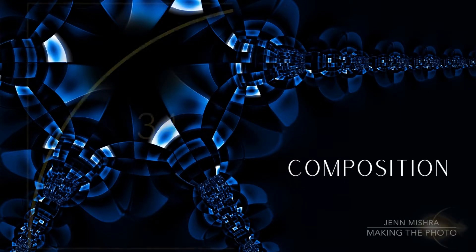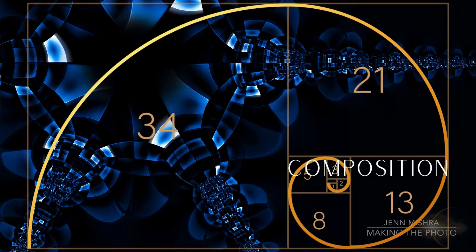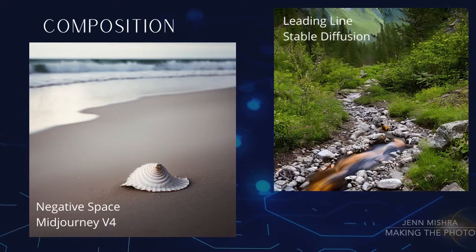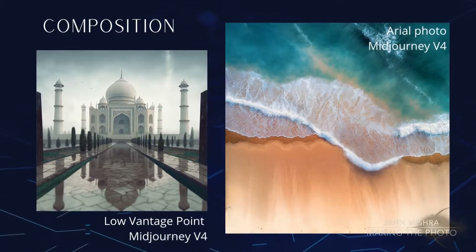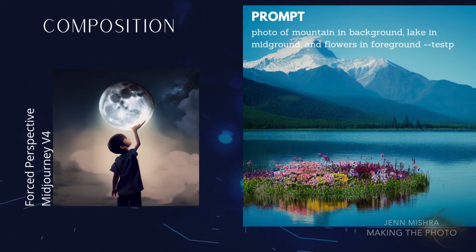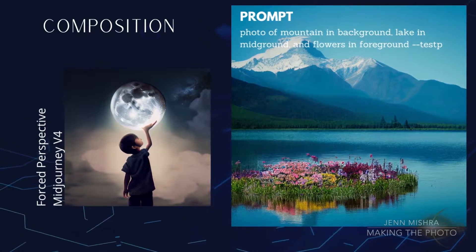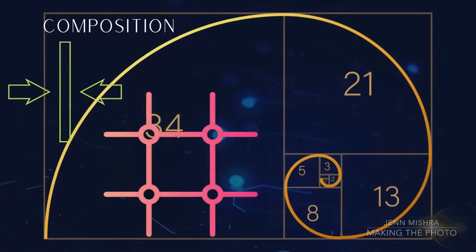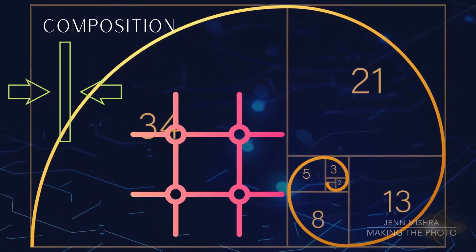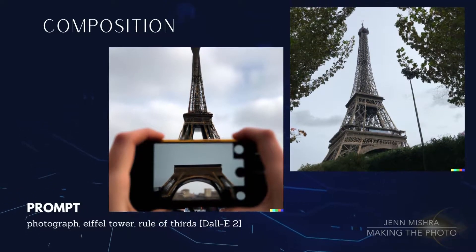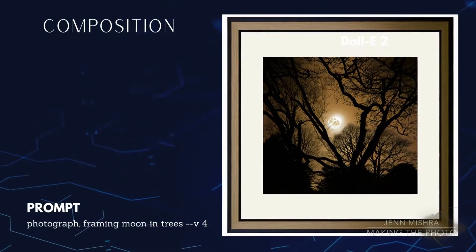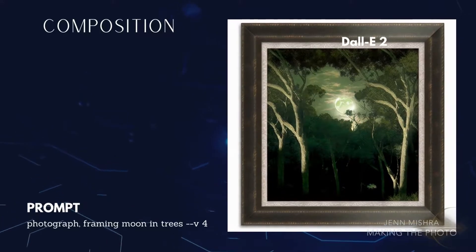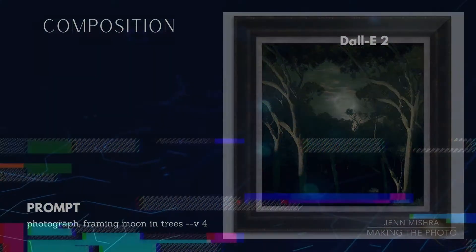Photographic composition isn't necessarily different from other visual arts, but there are some compositional techniques used a lot in photography. You can ask for negative space or leading lines. You can ask for a low vantage point or aerial views. You can even prompt for forced perspective shots or specify your foreground, mid-ground, and background. You can use compositional terms like rule of thirds, symmetry, or golden ratio, but I'm not always sure the AI gets it. Midjourney got a little confused when I asked for framing — a subject framed by another element — and gave me both the moon framed in tree branches and the entire photo in a frame.